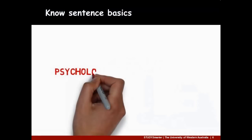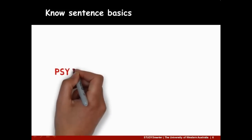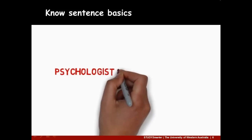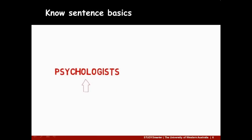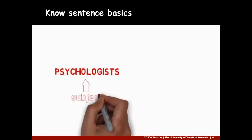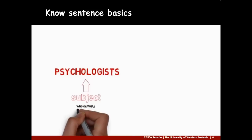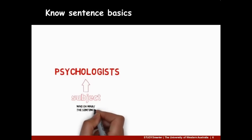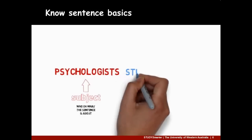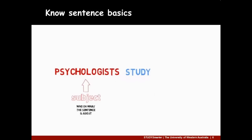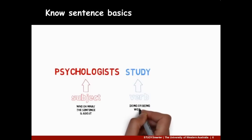Make sure your sentences are clear by knowing sentence basics. First, indicate the subject early on in the sentence. The subject tells readers who or what the sentence is about. Second, follow this subject swiftly with a verb. Verbs are doing or being words.